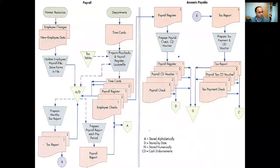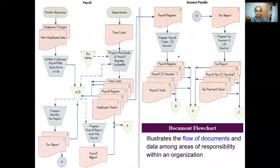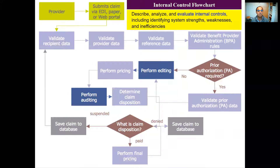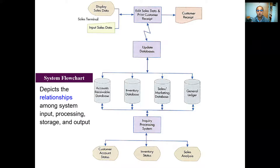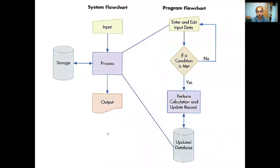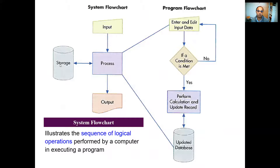The flowchart has four different types. The first is the document flowchart, which shows the flow of documents through the process. The second is the internal control flowchart, which describes and analyzes internal controls — the key point here is validation. We don't enter data into it but examine and investigate the process. Then we have two types of system flowcharts: one that shows the relationship between input, process, output, and storage; and one that shows the sequence of logical operations. So we have different types of flowcharts that we can use.